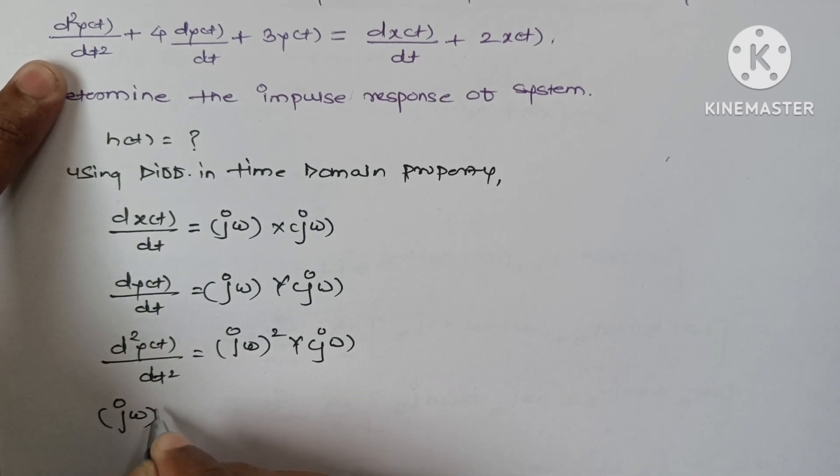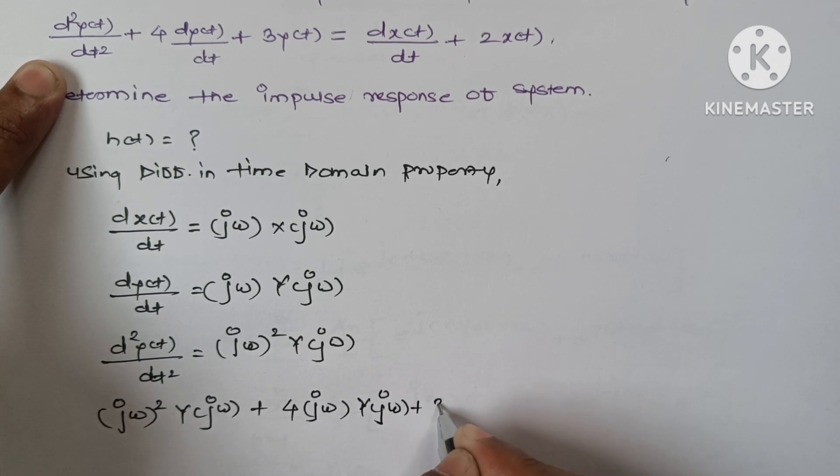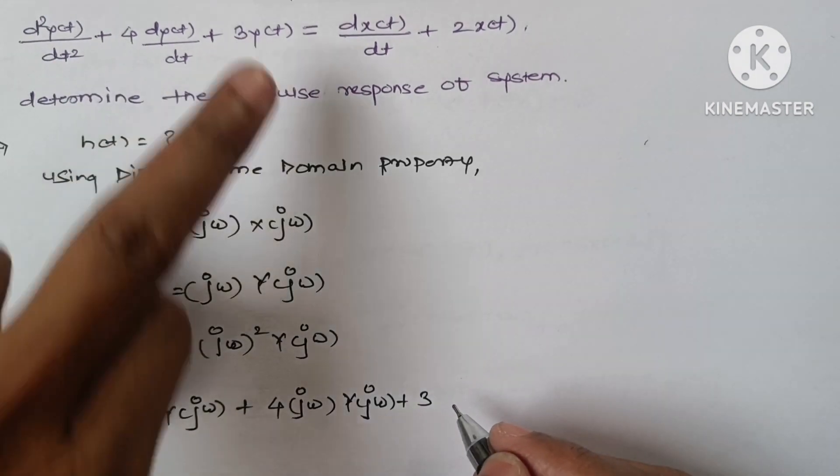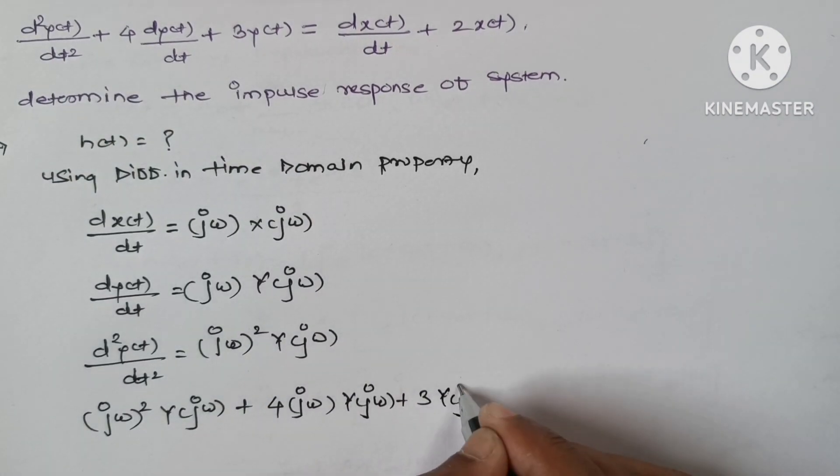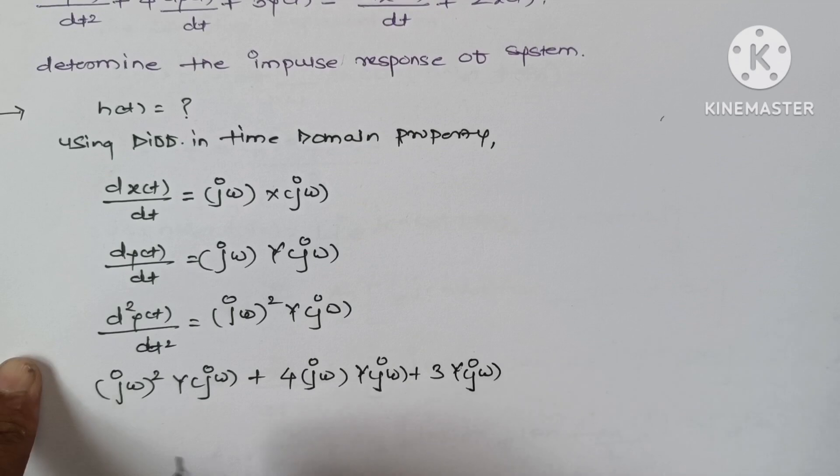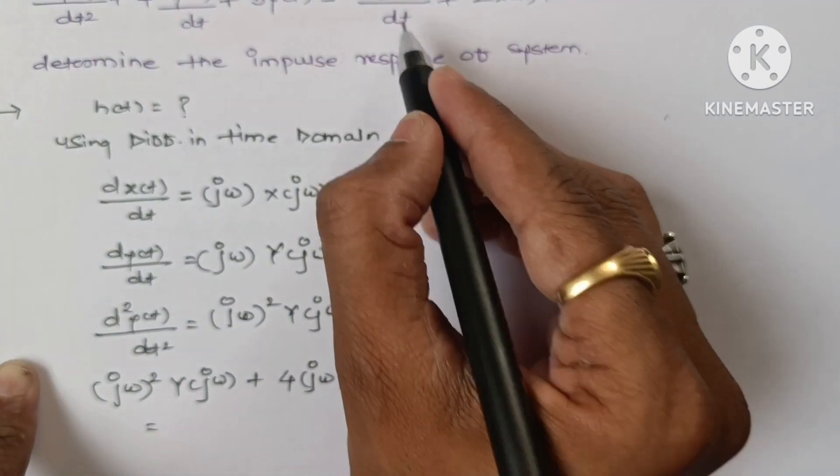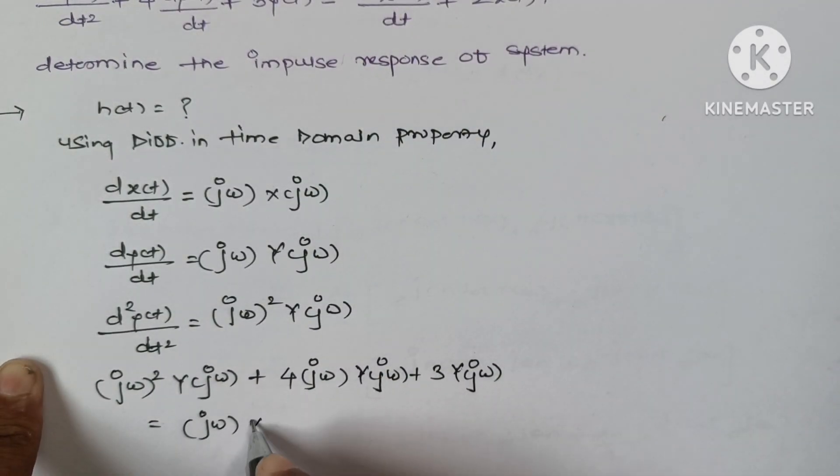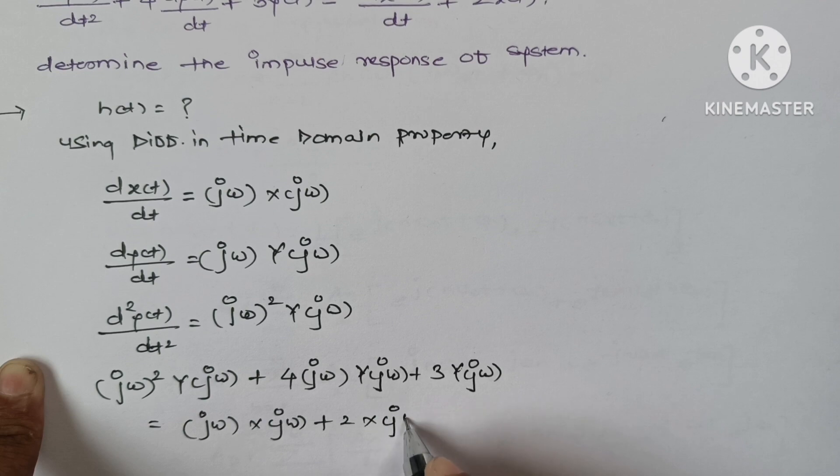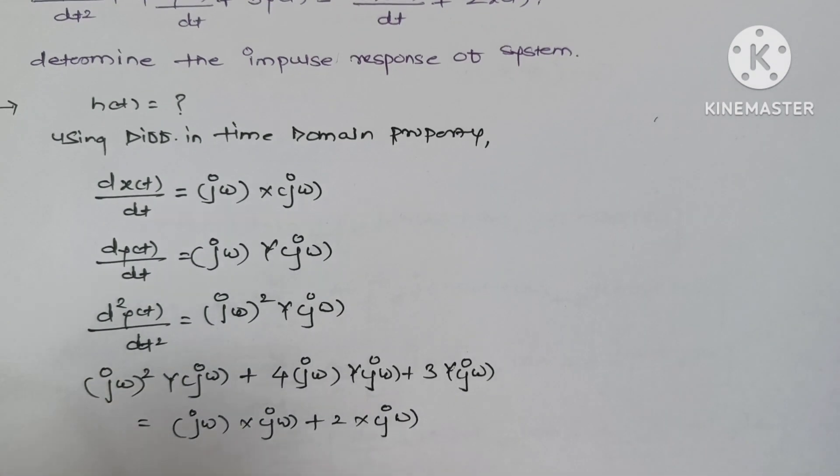We will get the equation: (jω)² y(jω) + 4jω y(jω) + 3y(jω) equals jω x(jω) + 2x(jω).